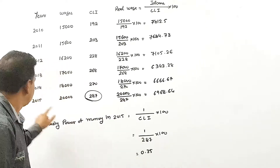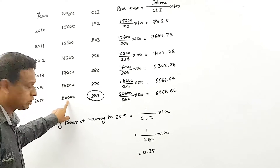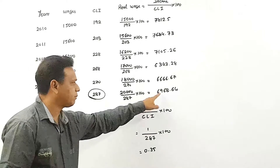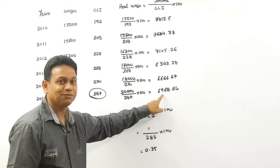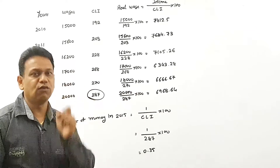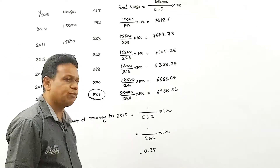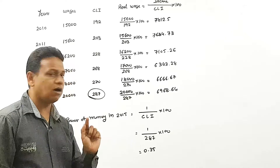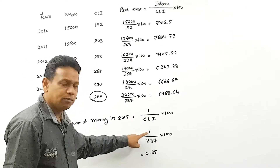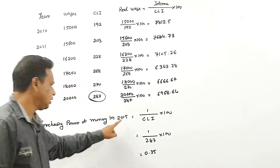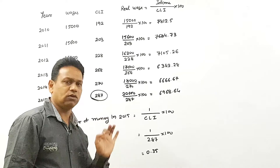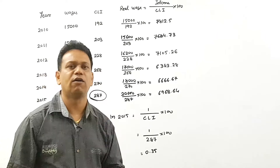Remember, your salary is 20,000 in 2015. Multiply it with 0.35 and you get approximately 7,000 a month — that is the real wages. This is the purchasing power of money; it is always expressed per 1 rupee. So your 1 rupee becomes 0.35 in 2015. This is the simple formula to find out purchasing power of money.